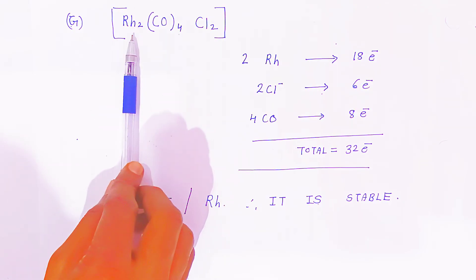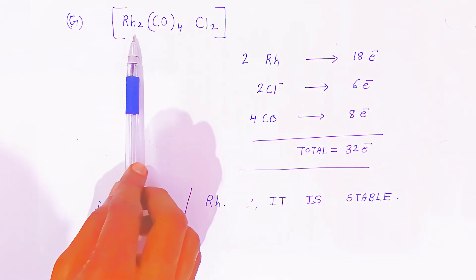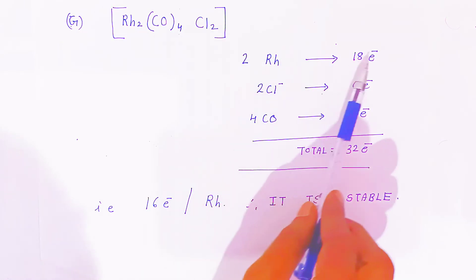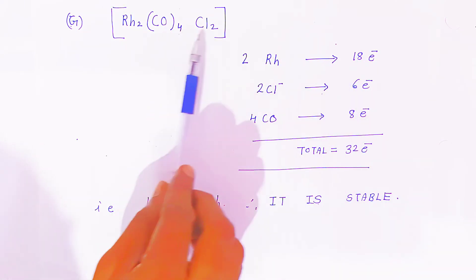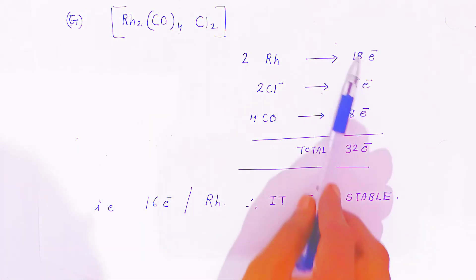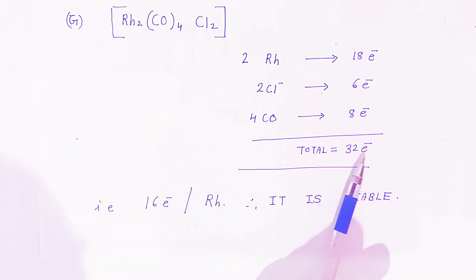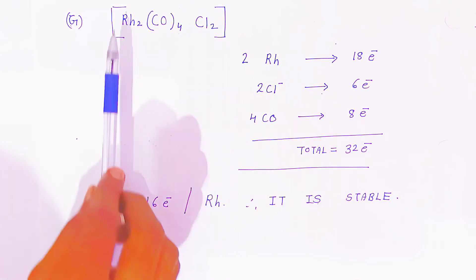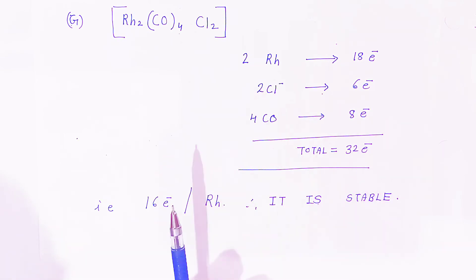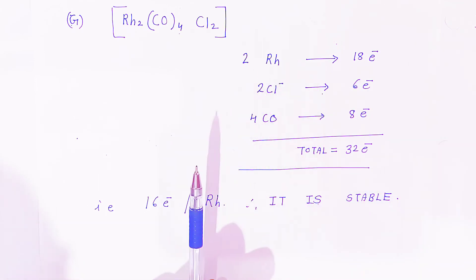For the rhodium dimer, because it is a dimeric compound, 2 rhodium atoms provide 18 electrons total. Two bridging chloride ligands donate 6 electrons and 4 carbonyl ligands donate 8 electrons. The total is 32 electrons, giving 16 electrons per rhodium atom. That is why this rhodium dimer is also a very stable complex.